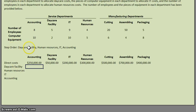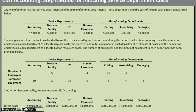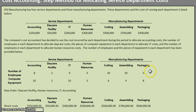The first department we're allocating out is the daycare facility. According to the problem, daycare will be allocated based on the number of employees in each department. Since we're using the STEP method, we care about all departments — not just manufacturing. Applying rule one, we cannot allocate back to daycare itself. And since this is our first allocation, no departments have been previously allocated, so we only need to follow that first rule.